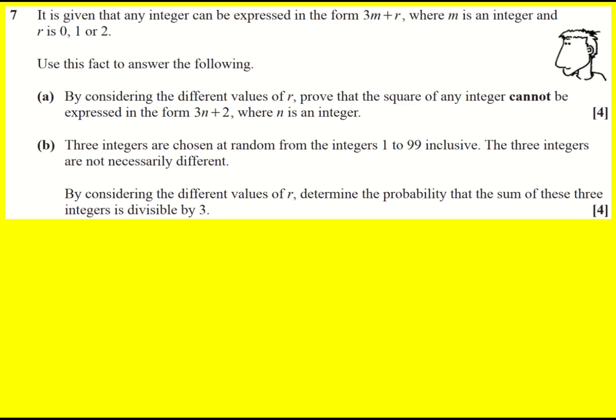I'm told at the start of this question that any integer can be expressed in the form 3m plus r, where m is an integer and r is 0, 1 or 2. That's another way of saying that every number is either a multiple of 3, 1 more than a multiple of 3, or 2 more than a multiple of 3. They're just written algebraically.